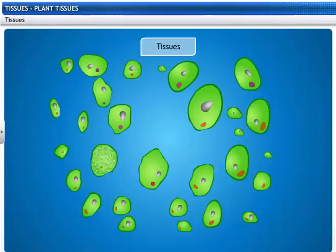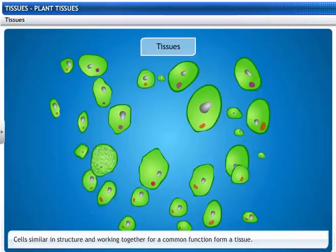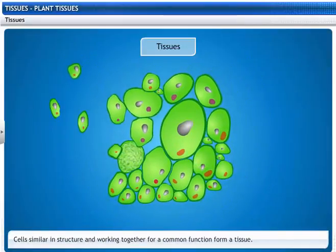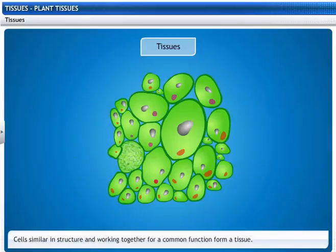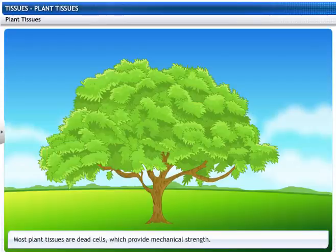What are tissues? A group of cells that are similar in structure and that work together to achieve a particular function forms a tissue. Plants are stationary, and so some of the tissues they have are dead cells, which provide mechanical strength.